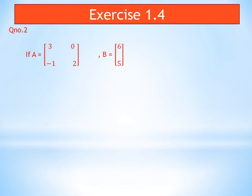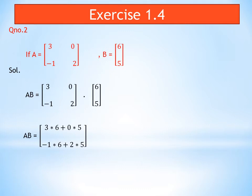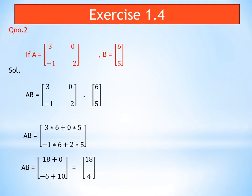Question number two has matrix A with elements 3, 0, -1, and 2, and matrix B with elements 6 and 5. We check that the number of columns of matrix A equals the number of rows of matrix B. There are two columns in matrix A and two rows in matrix B, so these matrices can be multiplied. We write AB: first row of A times first column of B gives 3×6 + 0×5; second row of A times first column of B gives -1×6 + 2×5. Solving gives 18+0 and -6+10, resulting in the matrix with elements 18 and 4.